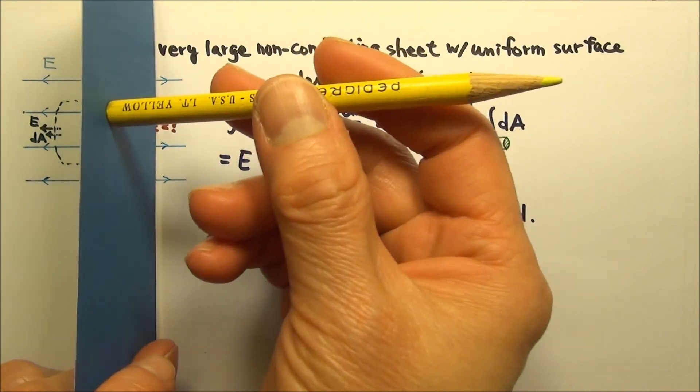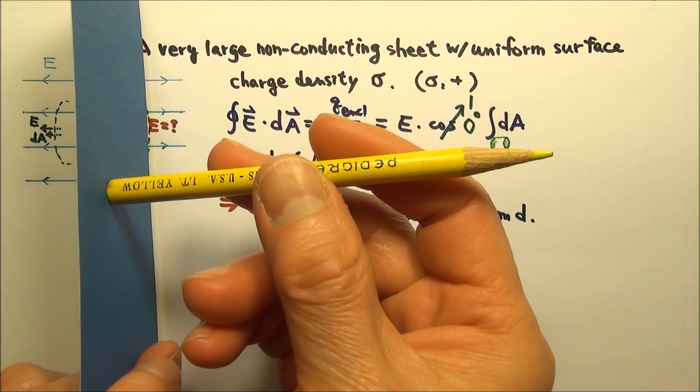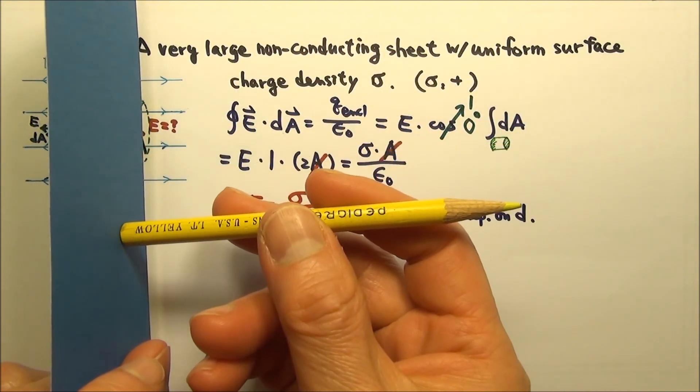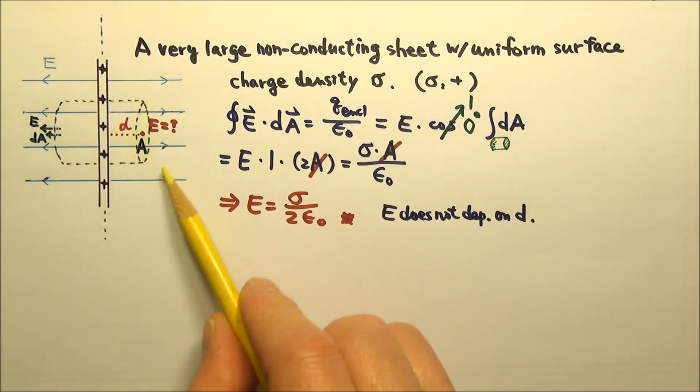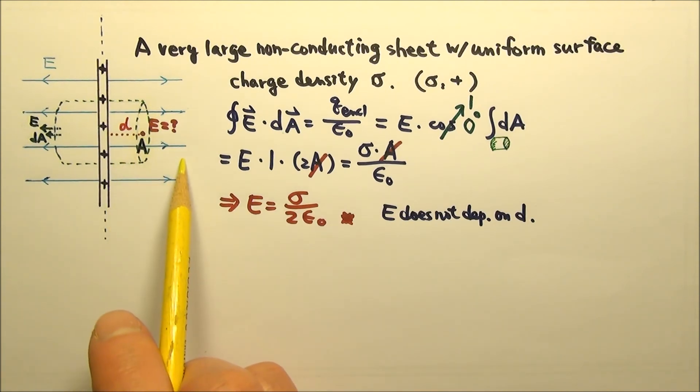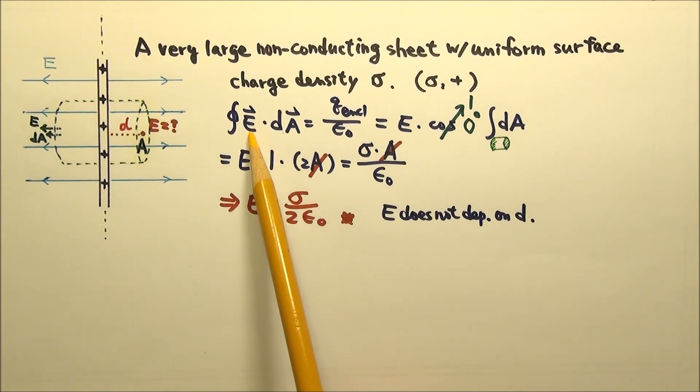Since all field lines are parallel with each other, the field lines do not spread out. That matches the fact that we have uniform electric field over here, because the field line density does not change.